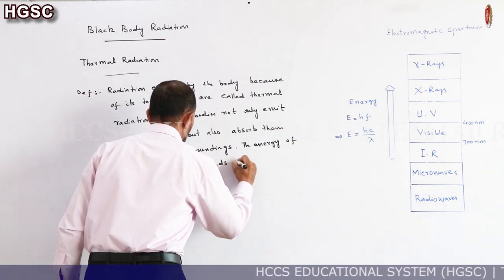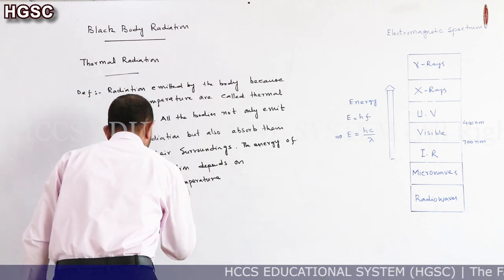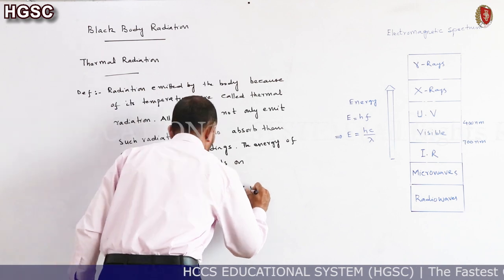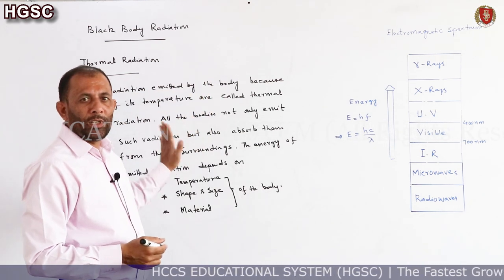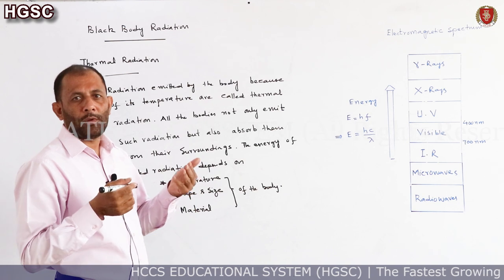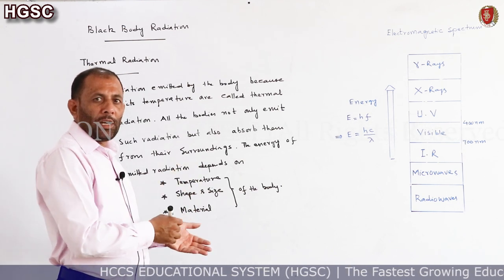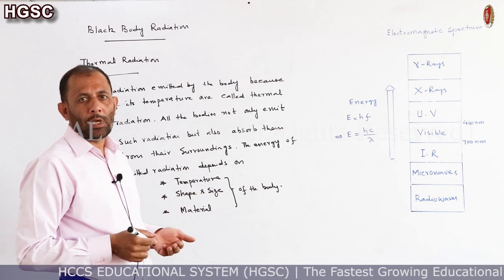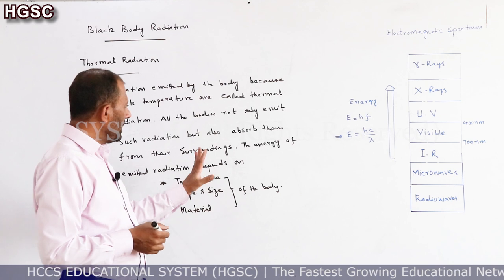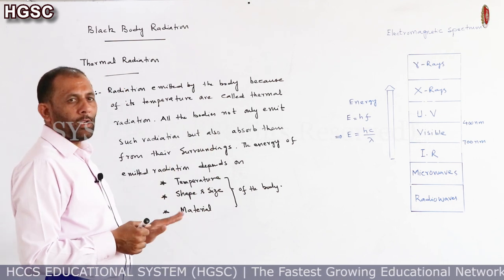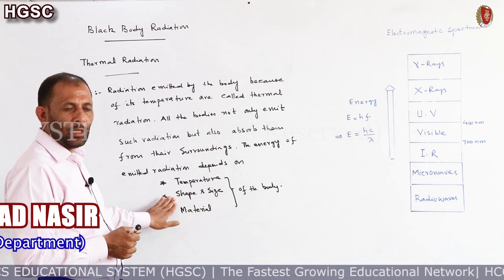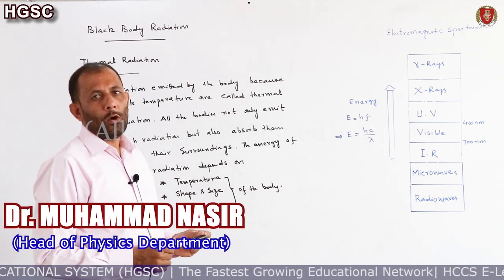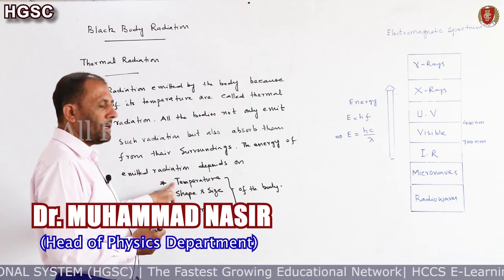So the energy of emitted radiation depends on: (1) temperature, (2) shape and size, and (3) material of the body. Radiation emitted by a body because of its temperature are called thermal radiations, and all bodies not only emit these radiations but absorb them from their surroundings. Now I want to explain the effect of temperature on the energy of emitted radiation.